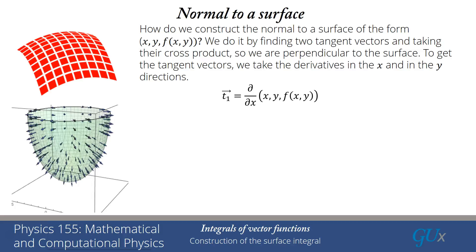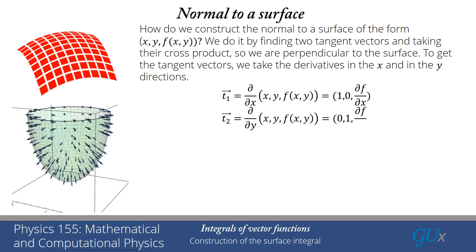The first tangent vector is the derivative of the surface equation: d/dx of x gives 1, d/dx of y gives 0, and df/dx is left in the third component. Similarly, the second tangent vector gives (0, 1, df/dy). Now we have to take the cross product of these two vectors.